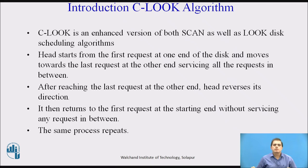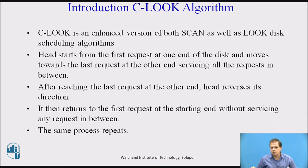Now we move on to the CLOOK algorithm. CLOOK is similar to the CSCAN algorithm. In this algorithm, the arm of the disk moves outward servicing requests until it reaches the highest request cylinder, then jumps to the lowest request cylinder without servicing any request, and then starts moving outward again servicing the remaining requests. It differs from CSCAN, which forces the disk arm to move to the last cylinder regardless of whether any request is there. CLOOK is an enhanced version of both SCAN and LOOK, uses the idea of wrapping tracks as a circular cylinder, but with better seek time than CSCAN. Like CSCAN, it avoids starvation and services requests more uniformly.